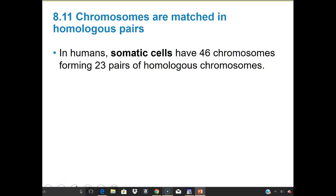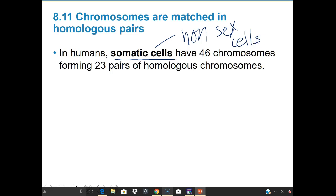In humans, somatic cells have 46 chromosomes, and those form 23 pairs of homologous chromosomes. Somatic cells just mean non-sex cells — essentially cells like skin, hair, nails, bone, muscles — anything that's not egg or sperm. So they're not sex cells.